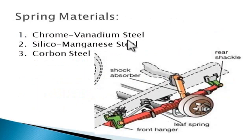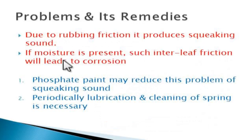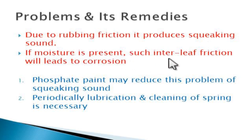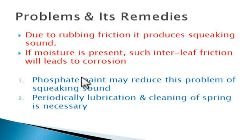The spring materials used are chrome manganese steel, silico manganese steel, and carbon steel. Problems involved with the leaf spring include: due to rubbing friction it produces a squeaking sound, and if moisture is present, such inter-leaf friction will lead to corrosion. Remedies include applying phosphate paint on the leaf spring to avoid squeaking sound, and periodic lubrication and cleaning of the spring.